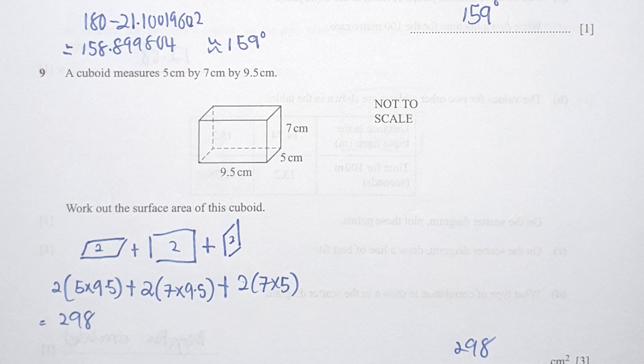Question 9: work out the surface area of this cuboid. I drew down the shape to illustrate: there's two rectangles for the top and bottom, two rectangles for the front and back, and two rectangles for left and right. So 2 times 5 times 9.5 plus 2 times 7 times 9.5 plus 2 times 7 times 5. Your final result should be 298 after the calculation.